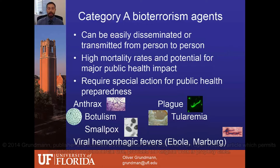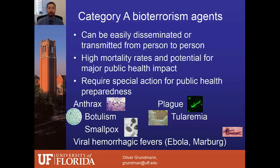When we talk about bioterrorism agents, we usually refer to category A through C bioterrorism agents as classified by the Centers for Disease Control and Prevention. Within category A are the most significant and potentially harmful agents, classified according to their easy dissemination or transmission from person to person. They are usually associated with a high mortality rate and potential for causing major public health impact.